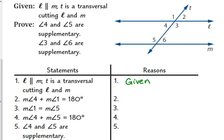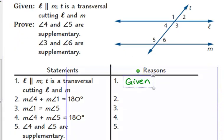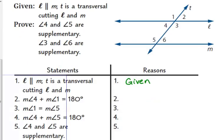The measure of angle 4 plus the measure of angle 1 is 180 degrees. What is that? The linear pair postulate — 1 and 4 are a linear pair, so their sum equals 180. That is the linear pair postulate. In case you haven't noticed, that one comes up a good little bit.